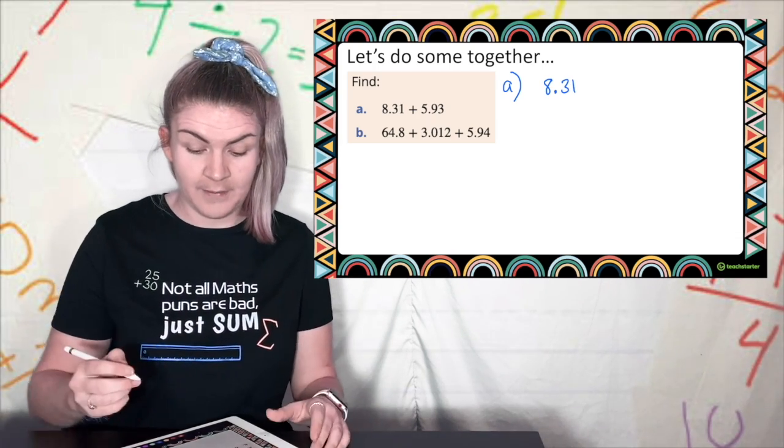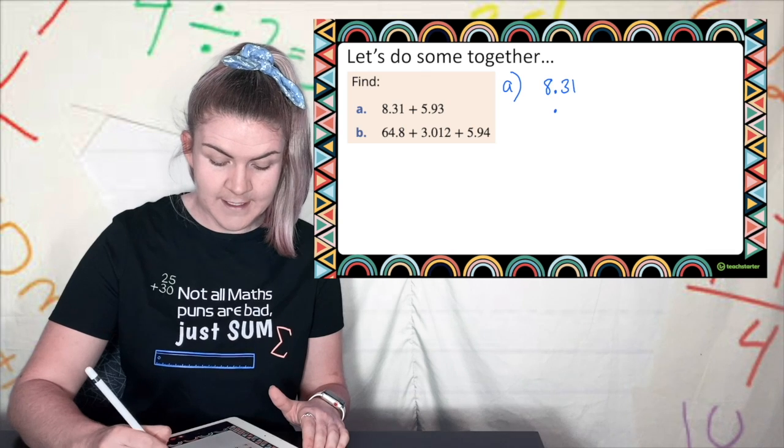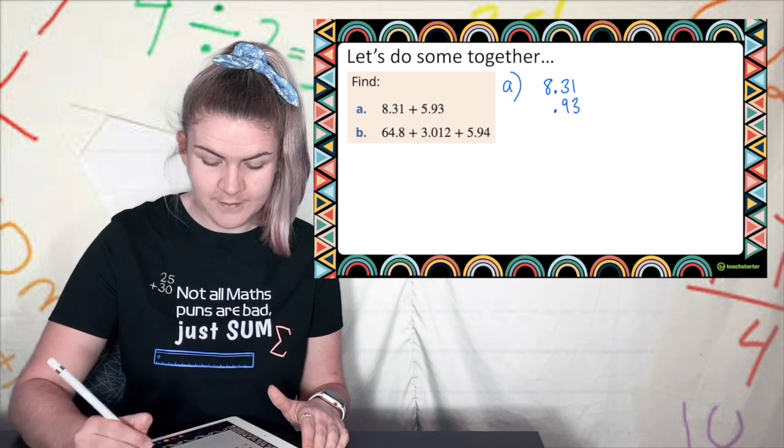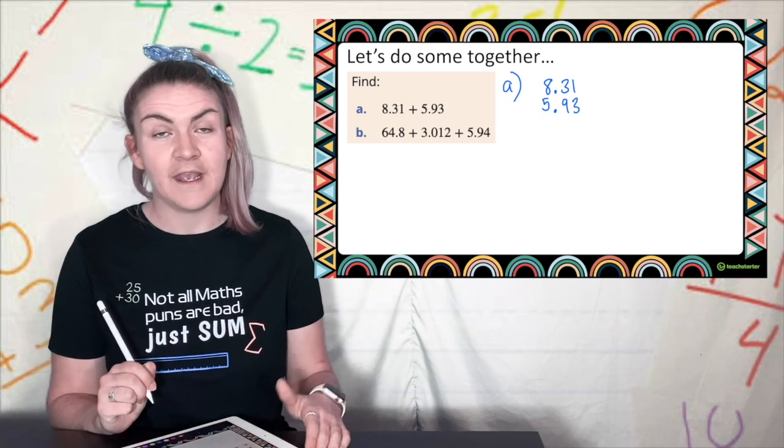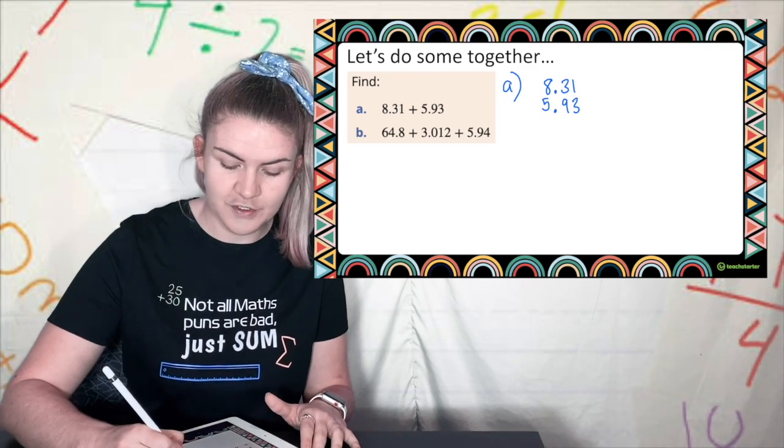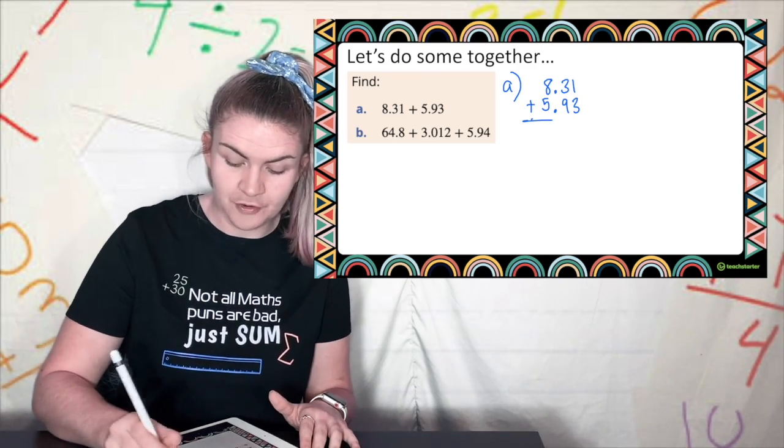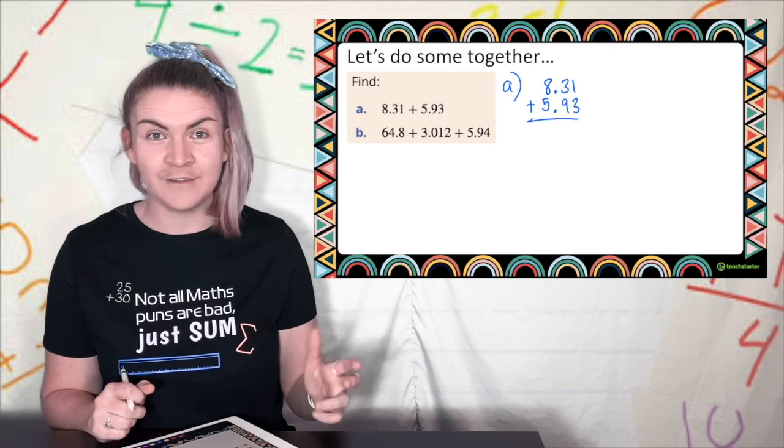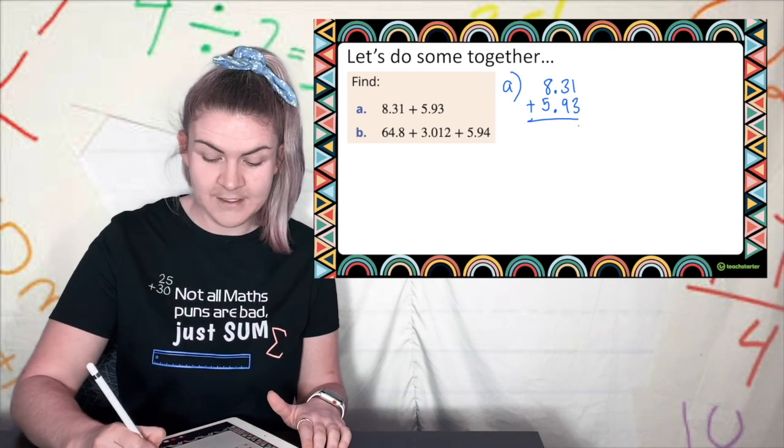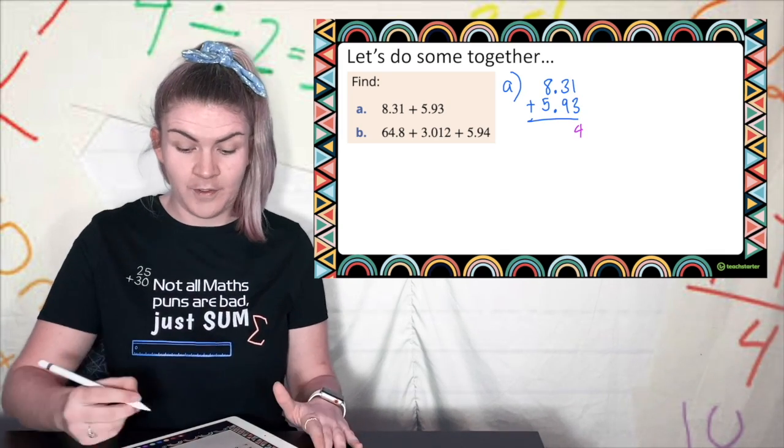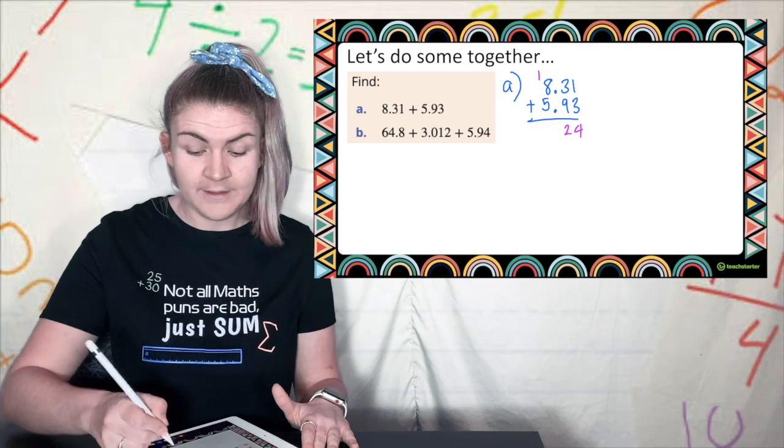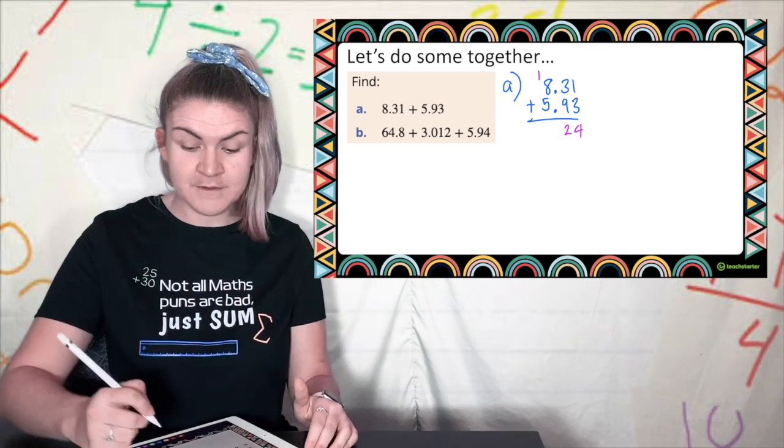Now I've got 5.93 so I'm going to put that decimal place there and I've got a 9 3 afterwards and I've got a 5 above and I need to say what operation I'm doing which is an addition. Draw a line. Once I have it written out I add like normal. 1 plus 3 is 4. 3 plus 9 is 12. 2 carry the 1.